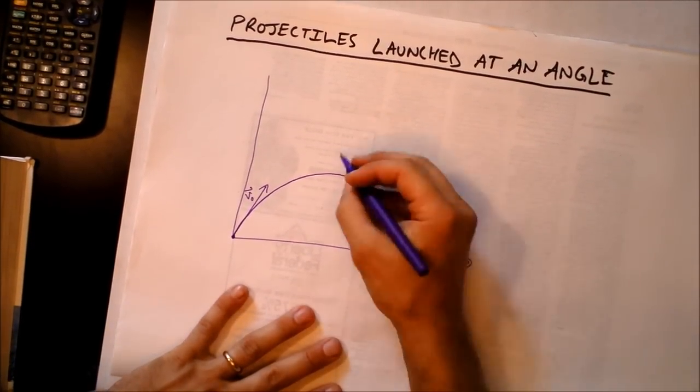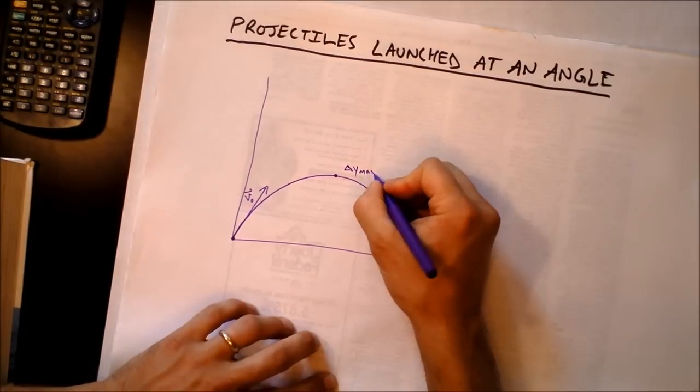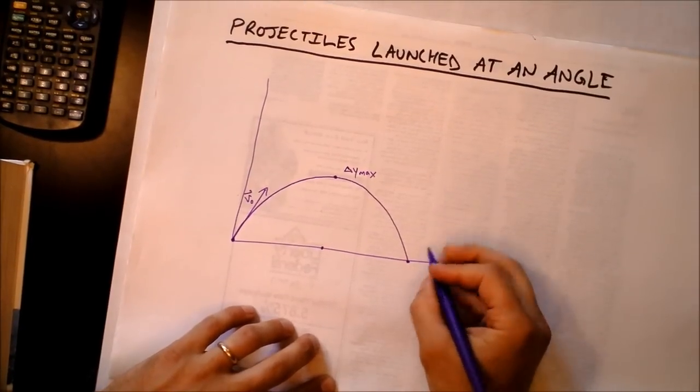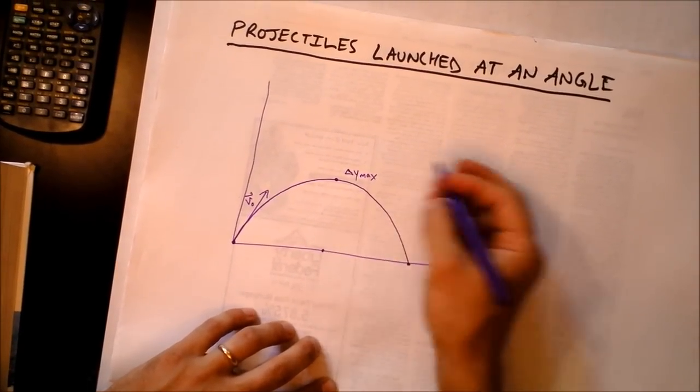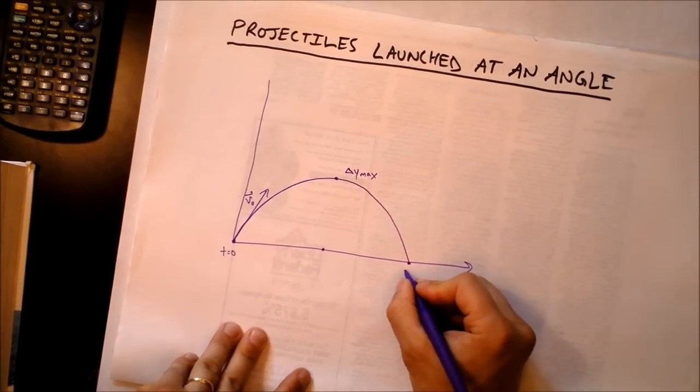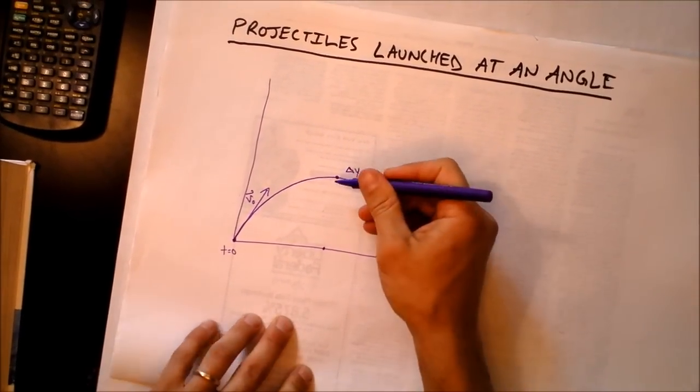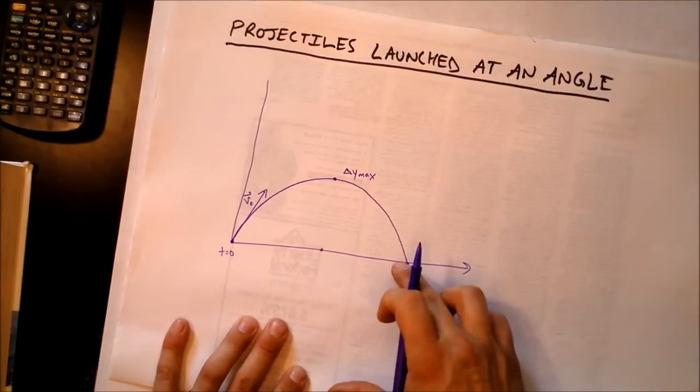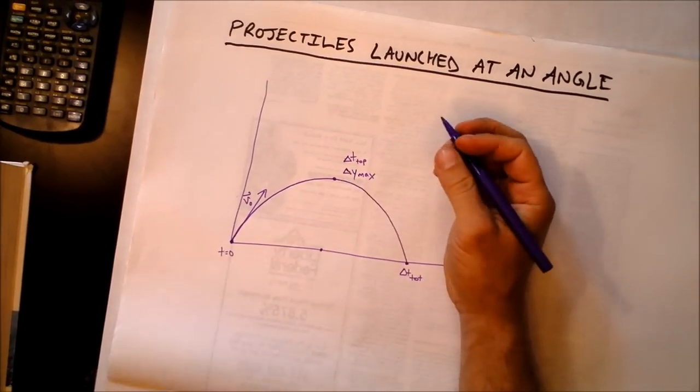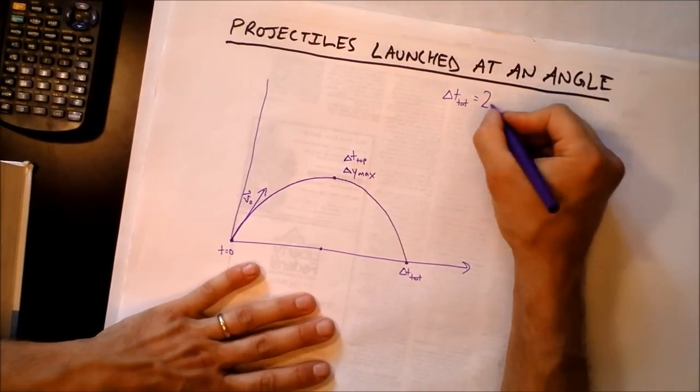Before we go on we can label some things about this. This point right here I want to call y_max, and this is actually the height of zero. If this time is t equals zero over here, then this is called delta t total. How much time do you think it takes to get to halfway compared to the full time? I'm going to say this happens at delta t top.